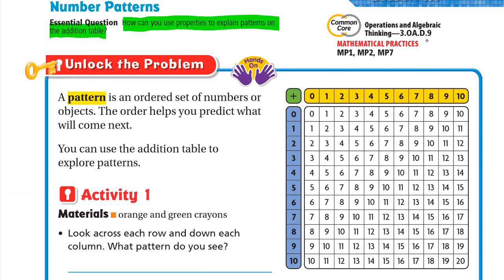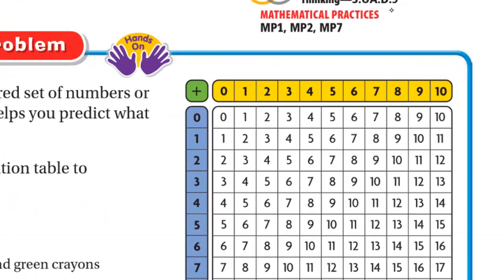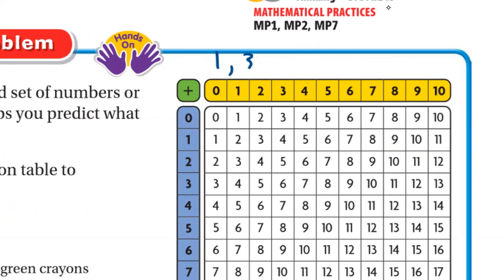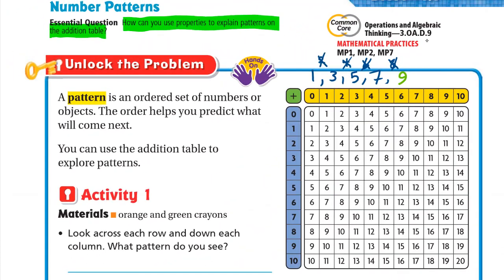A pattern is an ordered set of numbers or objects — the order helps you predict what will come next. For example: one, three, five, seven. We skipped every other number, so after seven we skip eight and write nine. One, three, five, seven, nine is a pattern because we can predict what comes next.